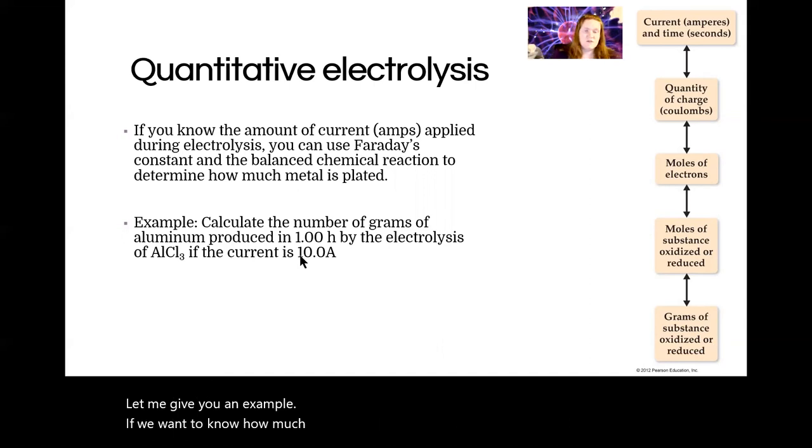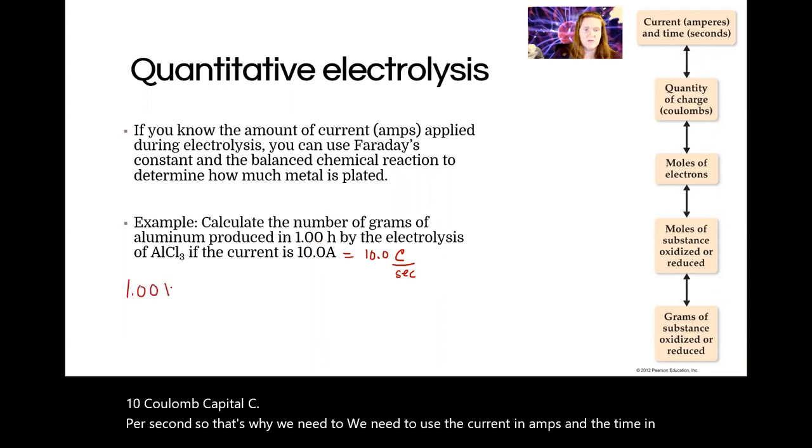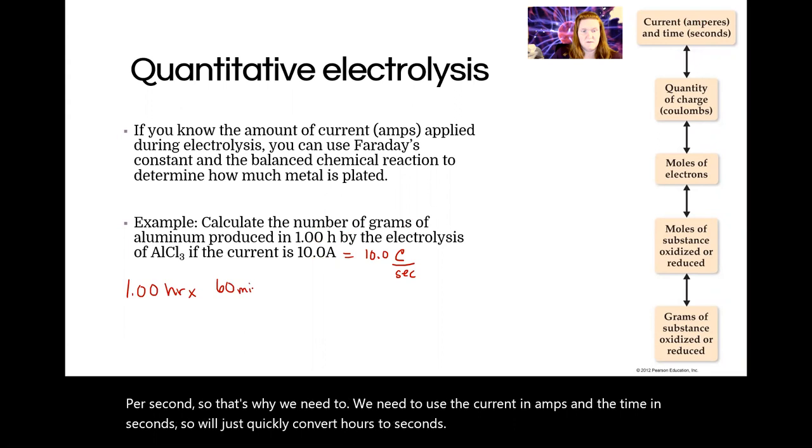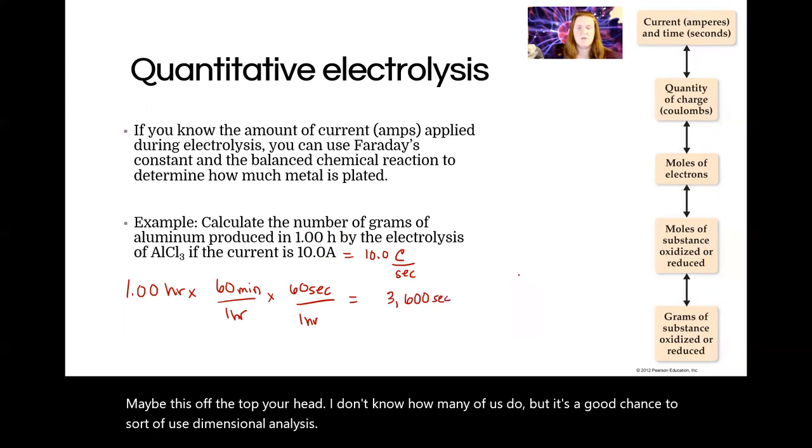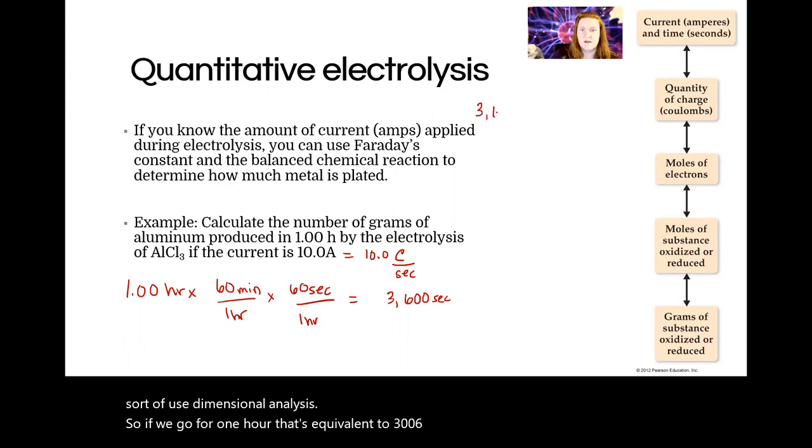So let me give you an example. If we want to know how much aluminum is produced if we electrolyze for one hour and the current is 10 amps. Okay. So it has to be in seconds. So amps are defined as Coulomb per second. So when we say 10 amps, it means 10 Coulomb, capital C, per second. So that's why we need to use the current in amps and the time in seconds. So we'll just quickly convert hours to seconds. Maybe you know this off the top of your head. I don't know how many of us do, but it's a good chance to sort of use dimensional analysis. So if we go from one hour, that's equivalent to 3600 seconds. So we have the time.